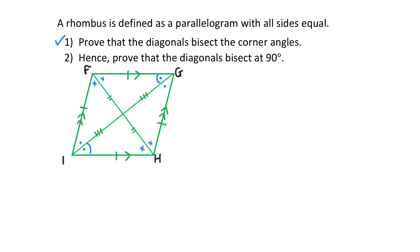The next question asks me to prove that the diagonals bisect at 90 degrees. You might already know this, but we're trying to prove it without using that fact. Since we're looking at where the diagonals intersect, it doesn't make sense to use big triangles — we'll use smaller ones that include the intersection point. Let's call the intersection point J, and we'll prove triangle FGJ and triangle HGJ.